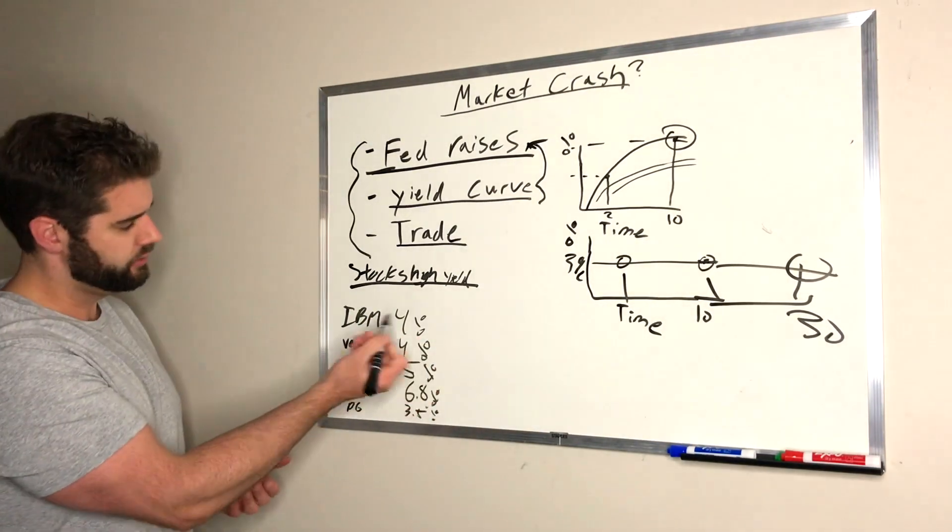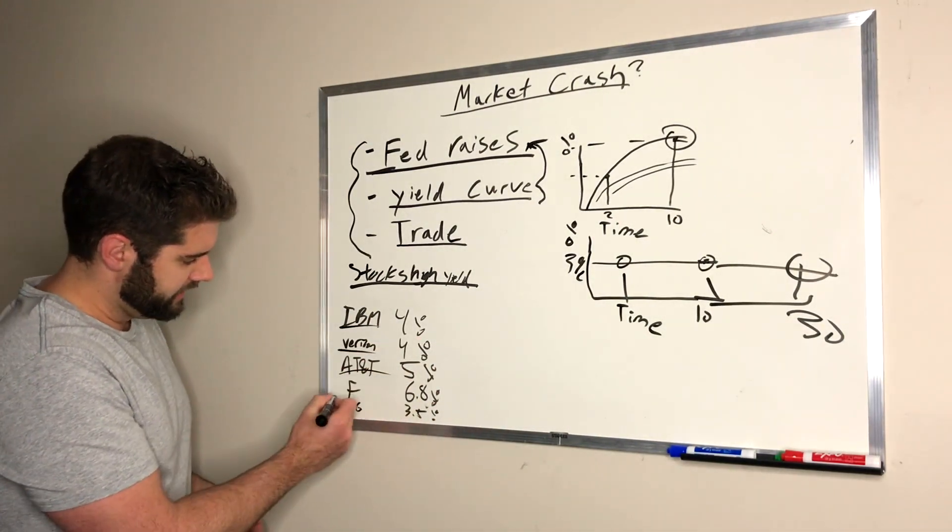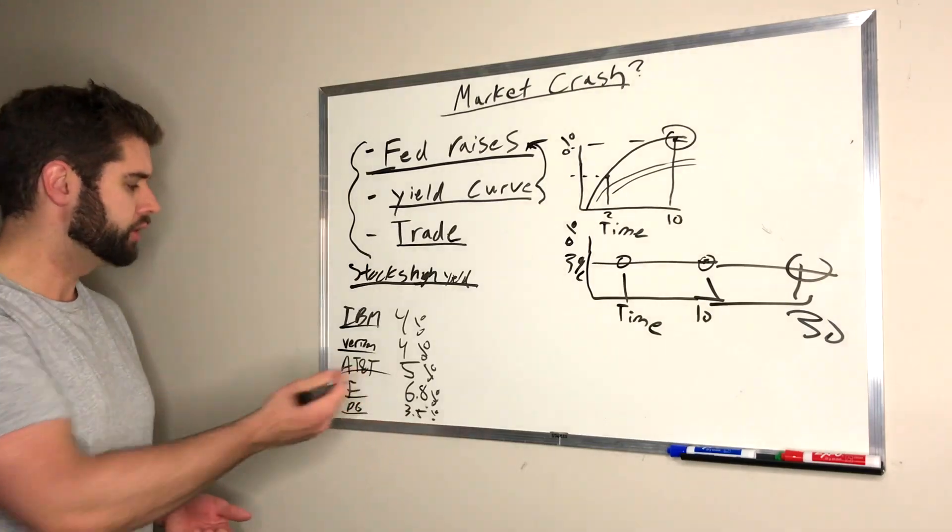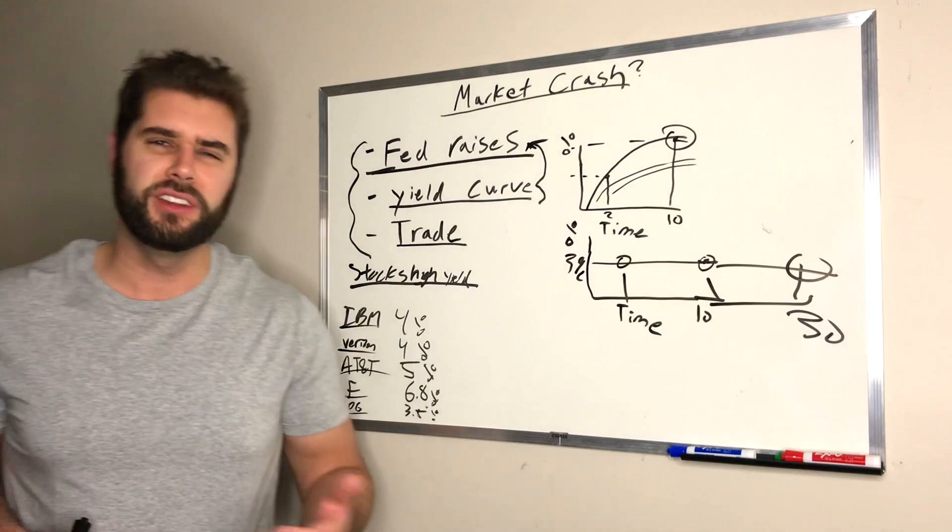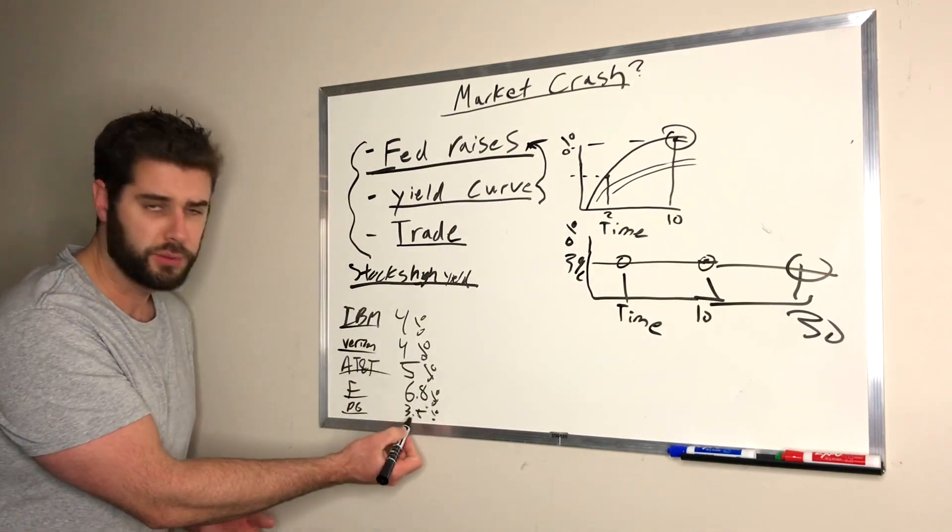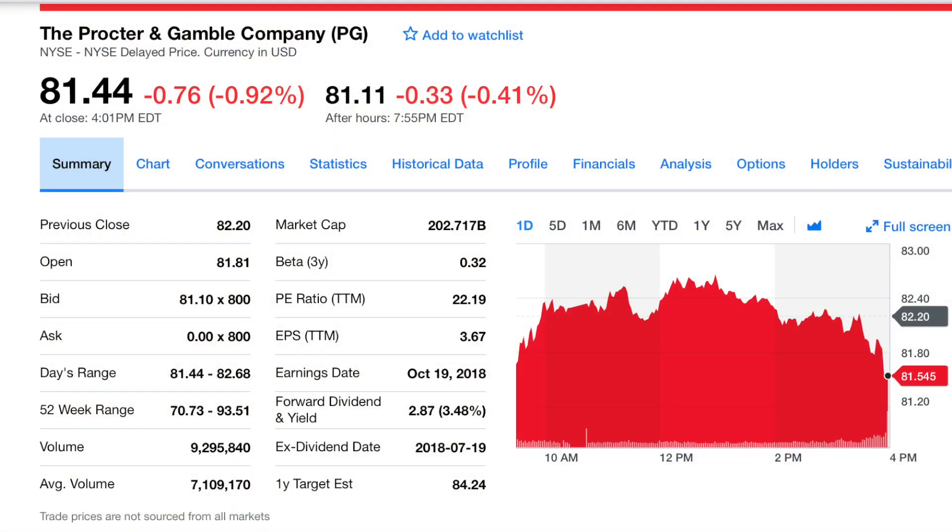So, we've looked lately. These are just approximate. We have IBM, Verizon, AT&T, Ford, Procter & Gamble. I like to look at some of the inferior goods. So, things that people buy even in a recession. So, like Procter & Gamble, it pays 3.5% on its dividend.